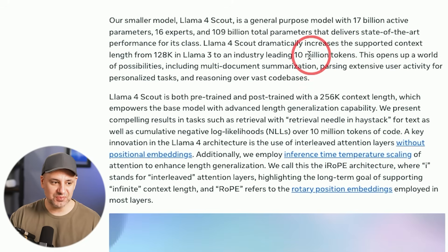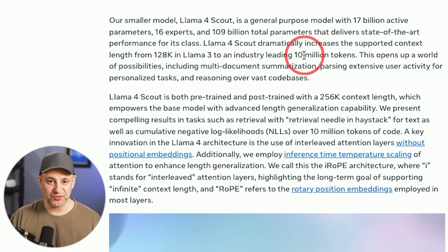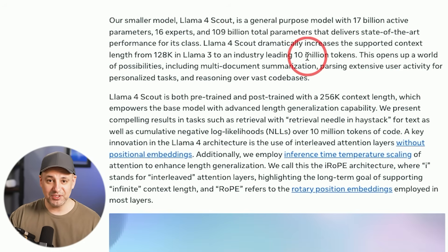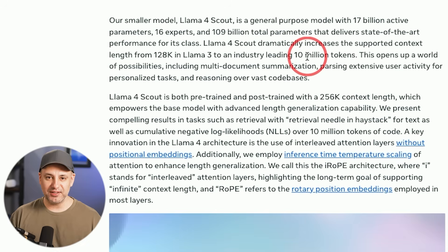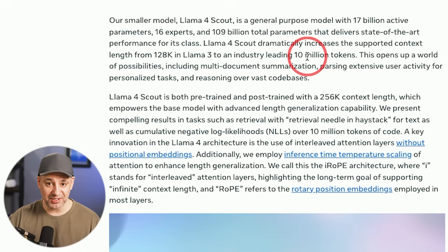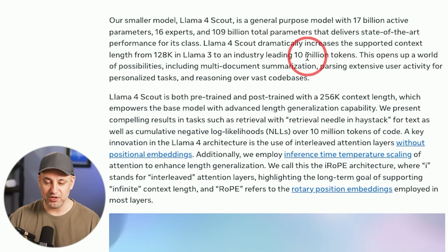That 10 million token context window is by far the largest in the industry — for open source, for closed source, for any large language model, it beats everything else available right now. That's going to completely change how we use large language models, since this has been one of the biggest limitations. Meta is clearly trying to push towards an infinite context window, and Scout at 10 million tokens is well on its way there.